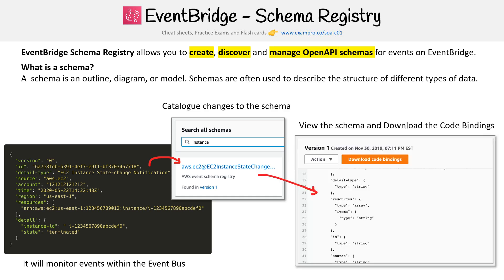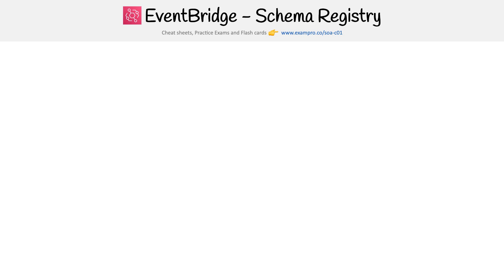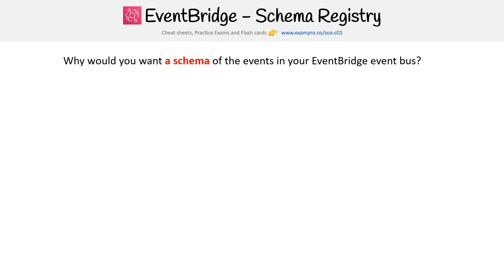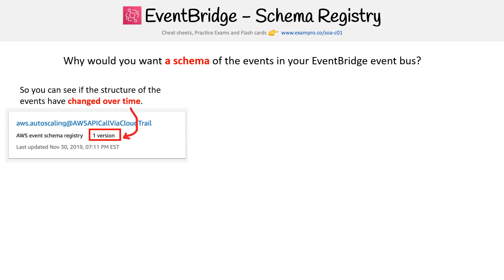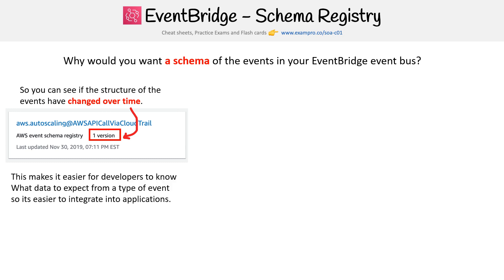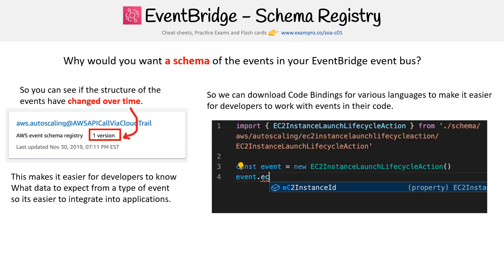You can view that schema and download the code bindings, which we'll talk about here in a minute. But why would you want to use a schema of events in your EventBridge event bus? So you can see if the structure has changed over time — you can see that the version has changed. Maybe you expect event data to be a very particular way, but then it's changed. This makes it easier for developers. You can actually export these schemas out so that you can use them with your code, and that's what code bindings are. You can download code bindings for various languages, and this makes it easier for developers to work with.